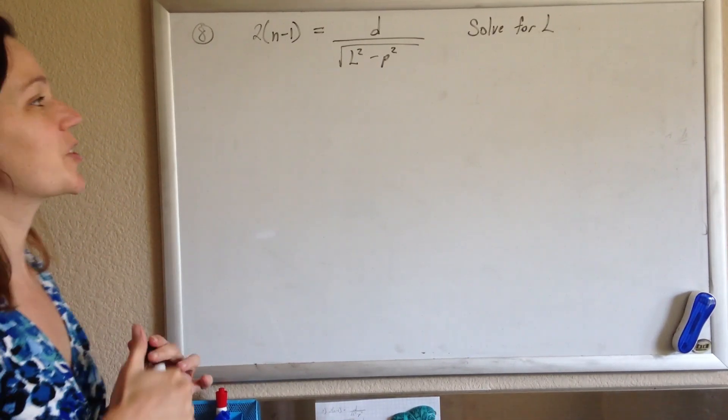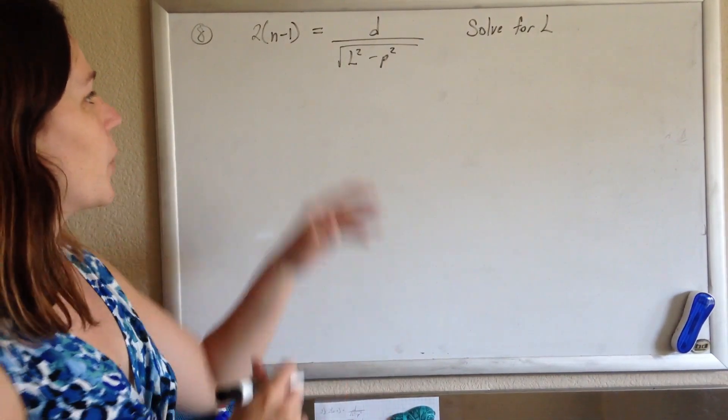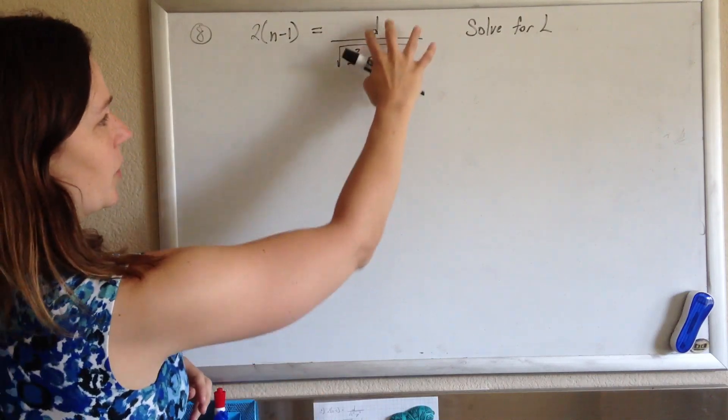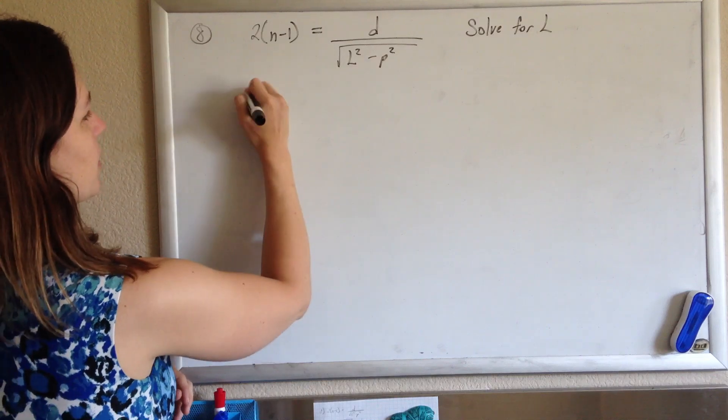Alright, this one's fun. This is straight up solving for L. We're going to undo everything that's happening with L, starting with getting rid of this fraction by multiplying both sides by that square root.